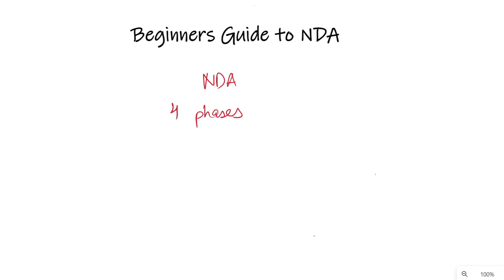ये four phases होते क्या क्या हैं? सबसे पहले तो आपका होता है exam। Exam साल में दो बार conduct कराया जाता है — NDA 1 और NDA 2। NDA 1 April के time पे होता है, NDA 2 September के time पे होता है। Exam clear करने वाले candidates की list result के time पे आती है और उनको SSB interview के लिए call आता है।